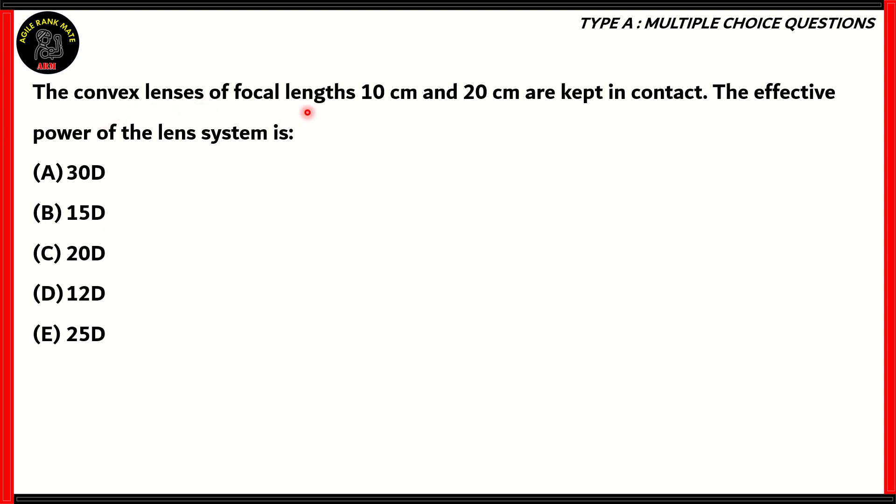The convex lenses of focal lengths 10 centimeters and 20 centimeters are kept in contact. The effective power of the lens system is: 30 diopters, 15 diopters, 20 diopters, 12 diopters, or 25 diopters. So how do we solve this question? Well, it says that we have two convex lenses which are kept in contact. Now let's name this one as the first lens and this one as the second lens. The first lens has a focal length equal to 10 centimeters and the second lens has a focal length equal to 20 centimeters.